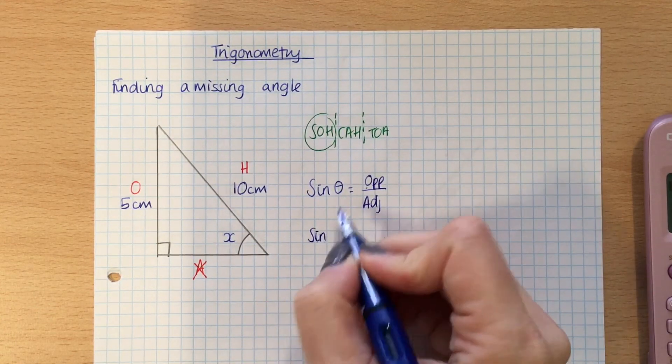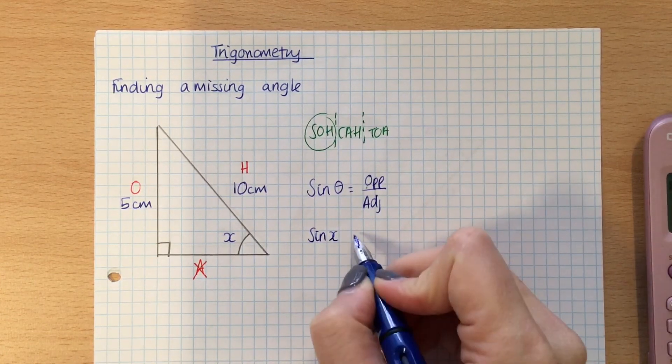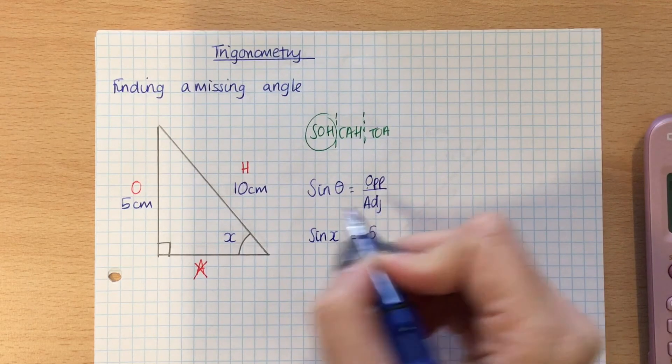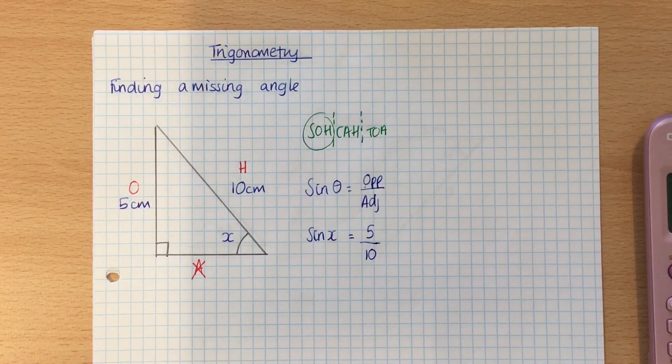So all I'm going to do now is substitute in what I know. So, sine, what's the size of the angle? Well, we don't know, so that's X, equals opposite is 5, and hypotenuse is 10. So I've got sine X equals 5 over 10.